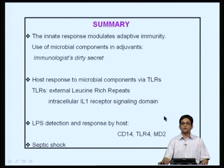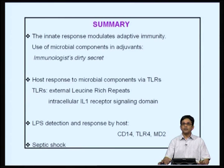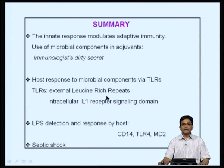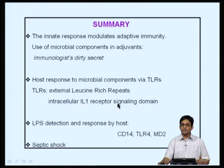Innate immunity modulates adaptive responses, mainly seen in the use of microbial adjuvants and microbial components in adjuvants. Complete Freund's adjuvant contains killed mycobacteria — known as the immunologist's dark secret by Charlie Janeway, who first propounded that innate components needed to be activated to get an optimal adaptive immune response. Subsequent studies resulted in identification of toll-like receptors in the host which recognize specific microbial components. TLRs contain external leucine-rich repeats important for protein-protein interactions and an internal IL-1 receptor signaling domain for signal transduction.